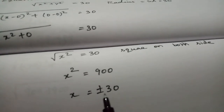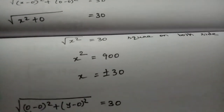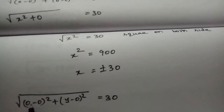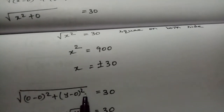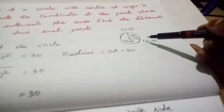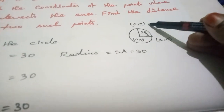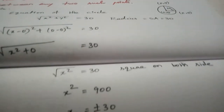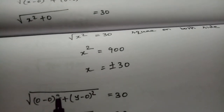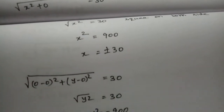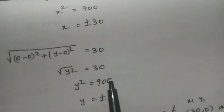For the y-axis point (0, y): √[(0-0)² + (y-0)²] = 30. So y² = 900, therefore y = ±30. The y-axis intersection point is (0, 30).